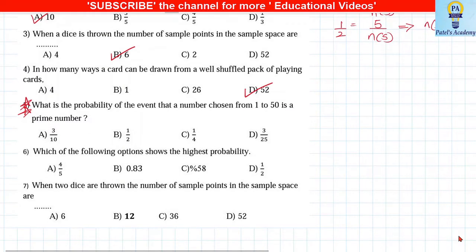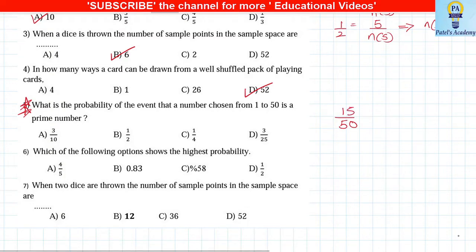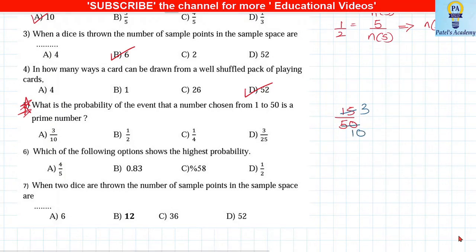An important MCQ: what is the probability that a number chosen from 1 to 50 is a prime number? Total outcomes are 50, and from 1 to 50 there are 15 prime numbers. Reducing 15/50 by 5 gives the answer 3 upon 10, option A.